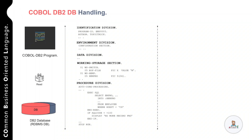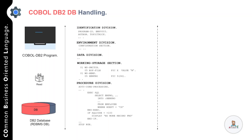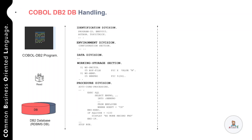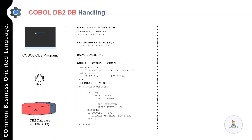In the working storage section we have specified the working storage variables used internally within the program. In the procedure division we have specified the business logic, and again we have not used any OPEN or CLOSE statements because we are not dealing with a file. To perform data operations — reading, writing, updating, or deleting data from a DB2 table — you must use SQL statements within EXEC SQL and END-EXEC notations.